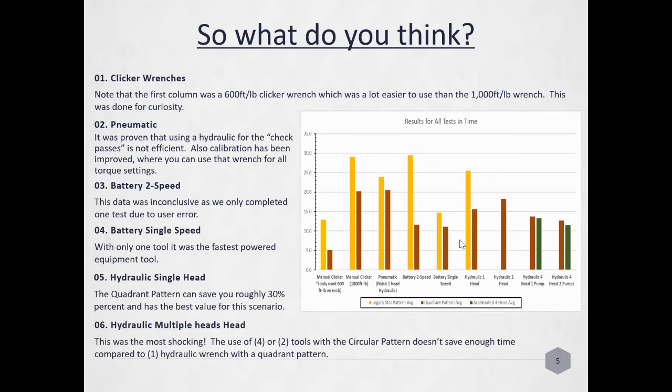Pneumatics, we saw that the pneumatics now are calibrated so well that you don't typically need to check them with hydrogs if you've got a good calibration place. The battery two speed data was inconclusive because of user error, but we didn't see a big uptick in time. If you look at the battery single speed with only one tool, it was the fastest powered equipment tool out there. One tool beats four with two pumps or any other pattern you want to go to.